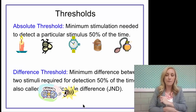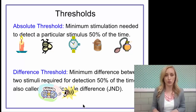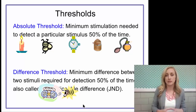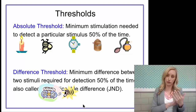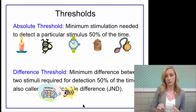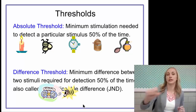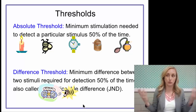Let's talk about thresholds and how much of a stimulus is required for our sensory organs to even pick it up. The absolute threshold is the minimum stimulation needed to detect a particular stimulus 50% of the time. So how much light is required, how much sound, how much pressure on your skin, how much of a smell or odor — however much is required for you to detect it 50% of the time meets your absolute threshold. Once you hear a sound, see a sight, or feel something, it has met your threshold because you are sensing it.